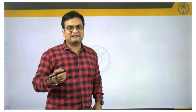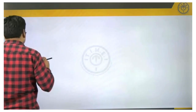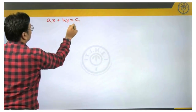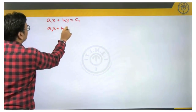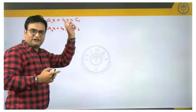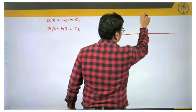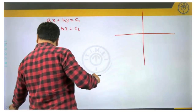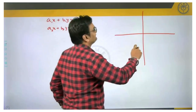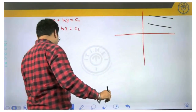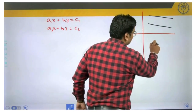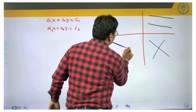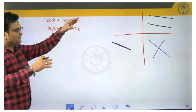In today's video we shall look at the concept of consistent, inconsistent, and consistent with infinite solutions. If you take a set of equations a1x + b1y = c1 and a2x + b2y = c2 and try to plot them on the graph, they will represent 2 lines. Those 2 lines could either be entirely parallel, intersecting, or entirely overlapping one on top of each other — these are the only 3 possibilities for a pair of lines.